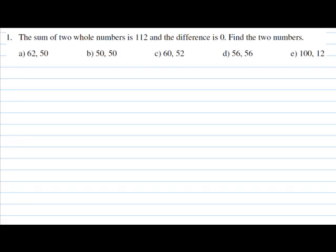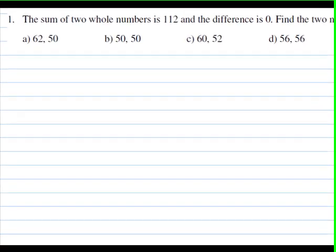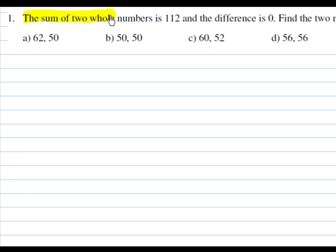Problem number one. We are given that the sum of two whole numbers is 112 and the difference is 0, and we want to find those numbers.